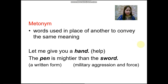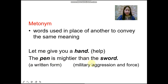Next, we have metonym. These are words used in place of another word to convey the same meaning. For example: 'Let me give you a hand' — the word 'hand' also means 'help.' Another example: 'The pen is mightier than the sword' — the word 'pen' means a written form, and 'sword' means military aggression and force. These are examples of metonyms.